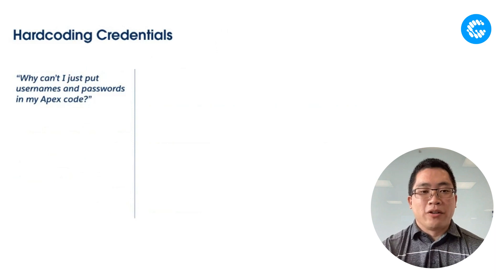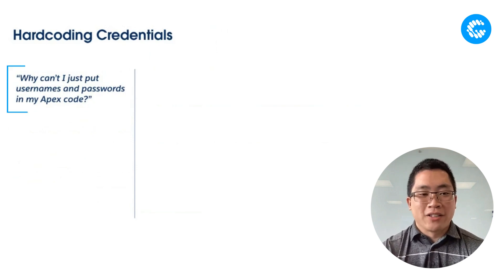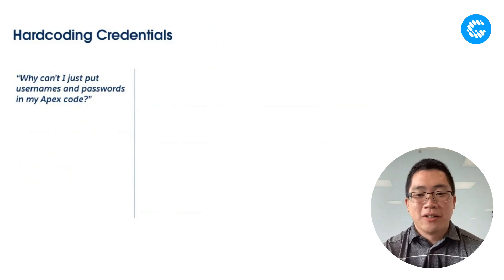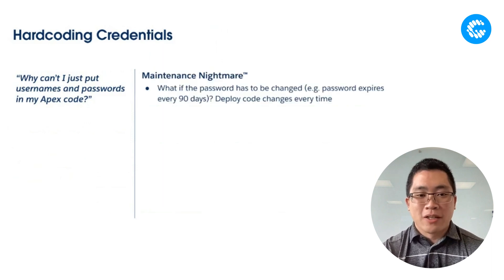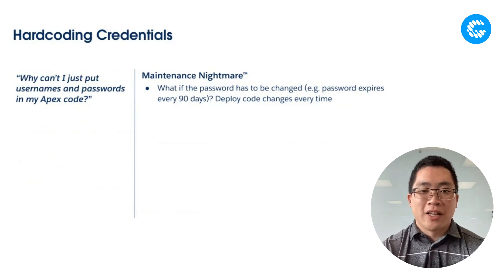So how do we store these credentials? How do we make it so that our Apex code can properly authenticate with external systems? Why can't you just put usernames, passwords, and keys in your Apex code? There are several key reasons. First, it becomes an absolute maintenance nightmare. If your passwords are changing every 90 days or every six months, that requires you to deploy code changes to production every time that occurs, which can cause a lot of disruption to the business.